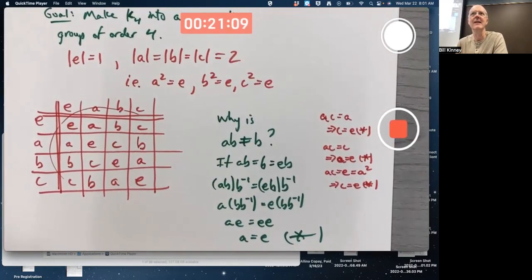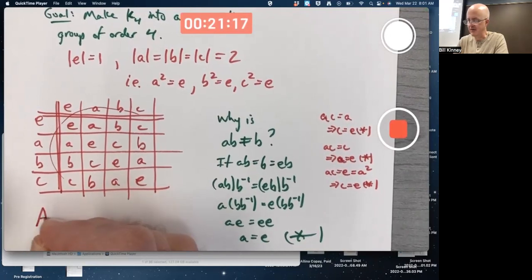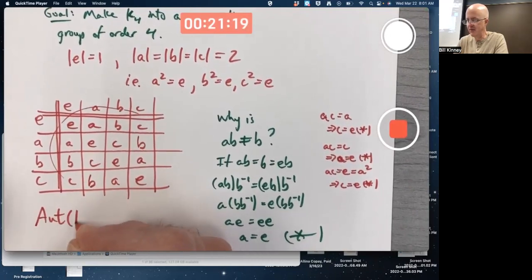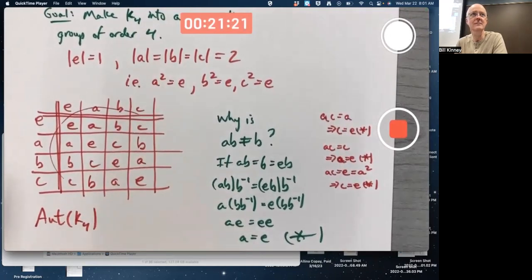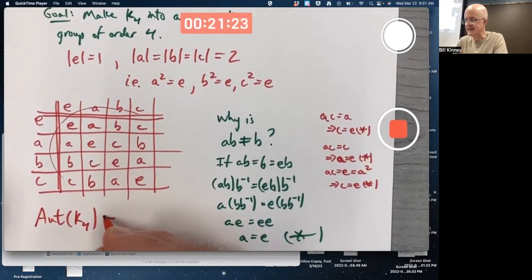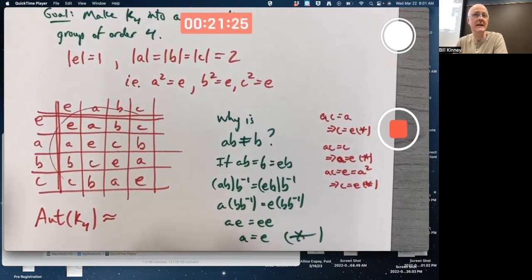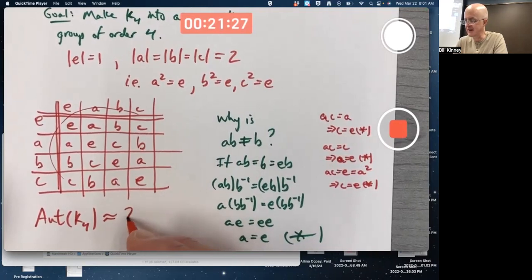But again, the roles of A, B, and C probably could be switched around, and we get the same kind of structure to the Cayley table. But that's a hint about maybe the group of automorphisms of K4 is something relatively easy to figure out. I'm going to put a question mark there.